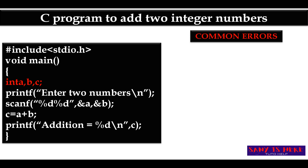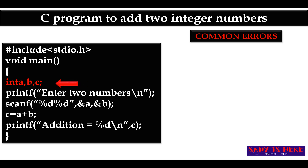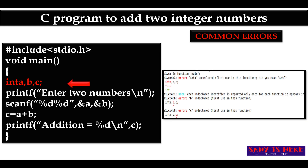The next type of mistake is not leaving a space after typing the data type — that is not the correct syntax. You should write the data type, then a space, then declare the variables. If you omit the space, it shows errors like 'a is undeclared', 'b is undeclared', and 'c is undeclared', because it does not recognize a, b, c as integers.